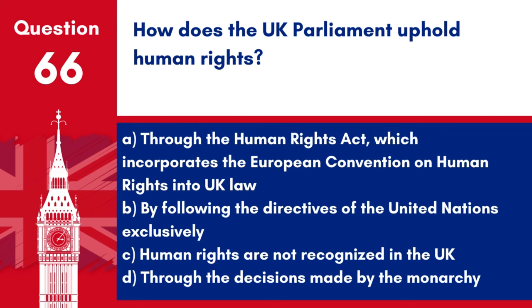Question 66. How does the UK Parliament uphold human rights? A. Through the Human Rights Act, which incorporates the European Convention on Human Rights into UK law. B. By following the directives of the United Nations exclusively. C. Human rights are not recognised in the UK. D. Through the decisions made by the monarchy. Answer: A. Through the Human Rights Act. The UK Parliament upholds human rights through the Human Rights Act, which incorporates the European Convention on Human Rights into domestic law.